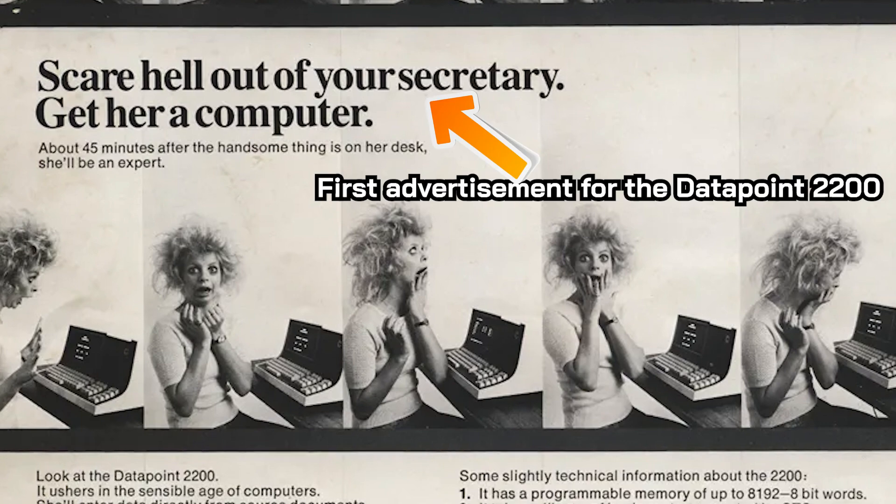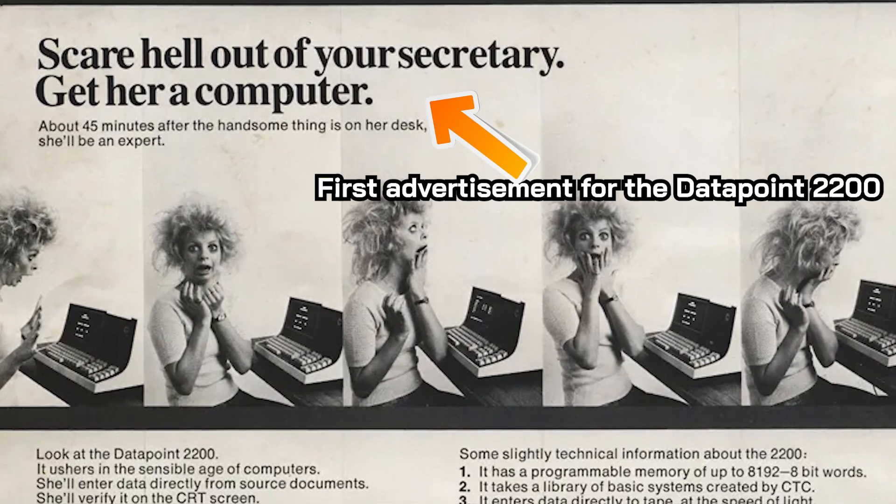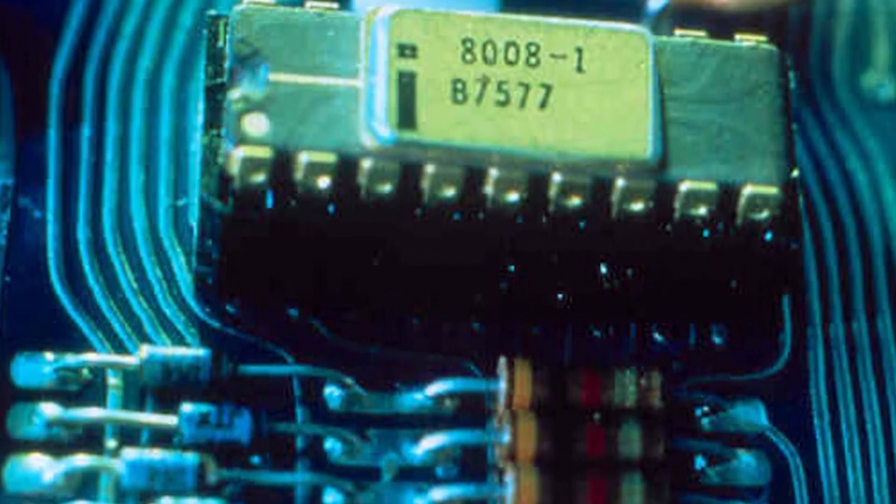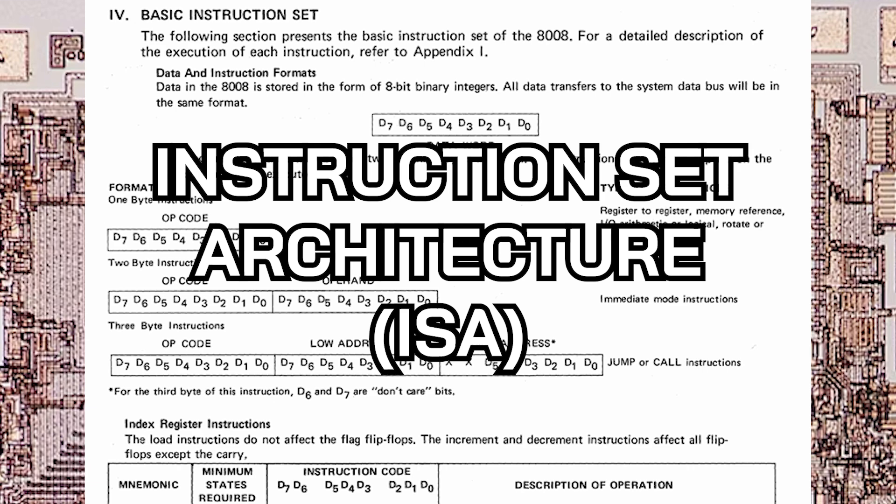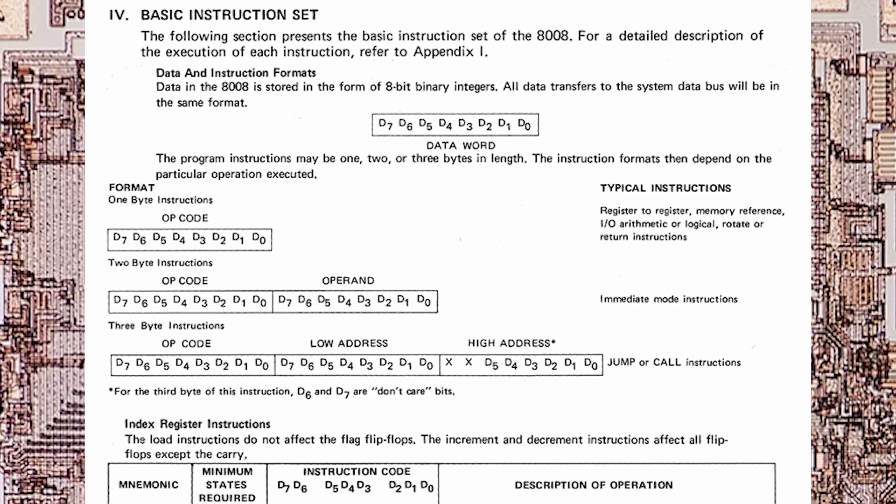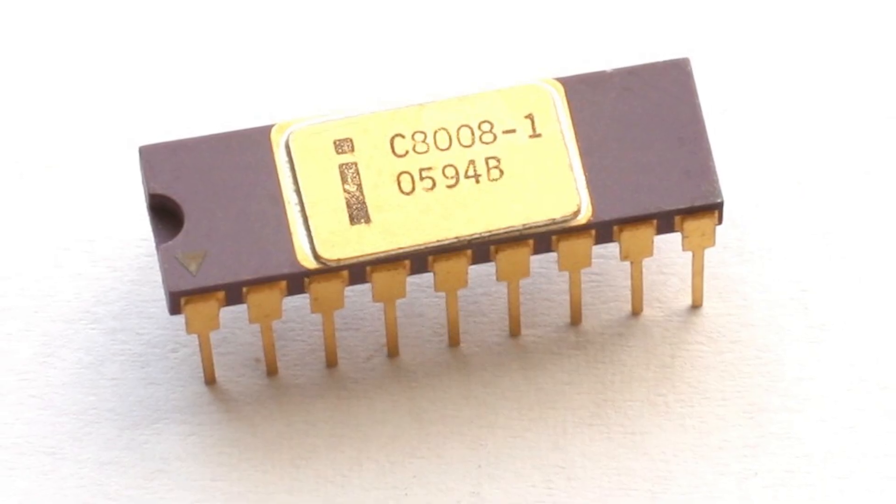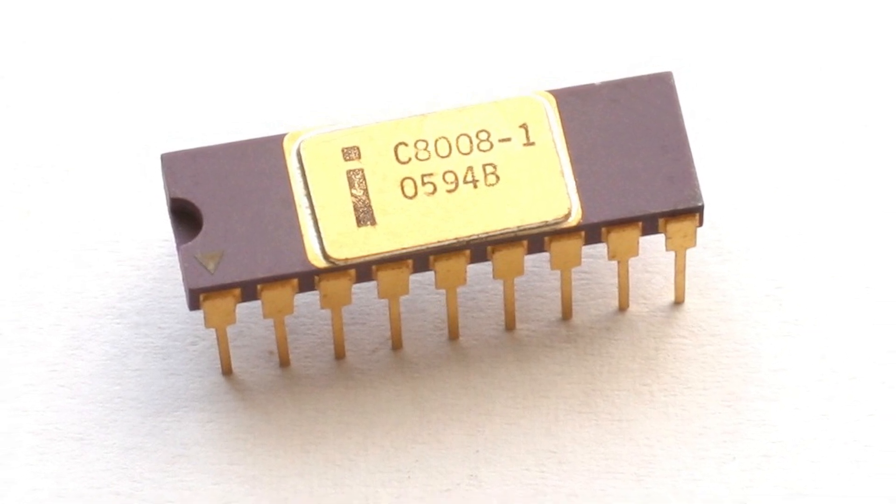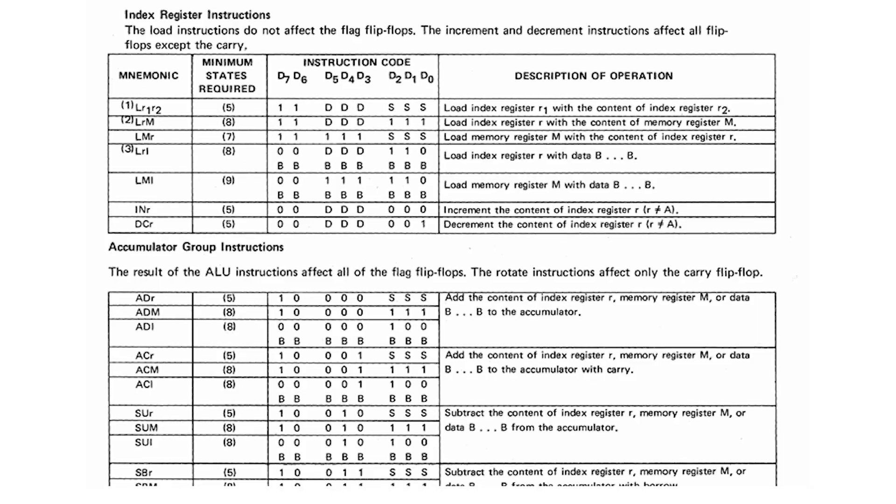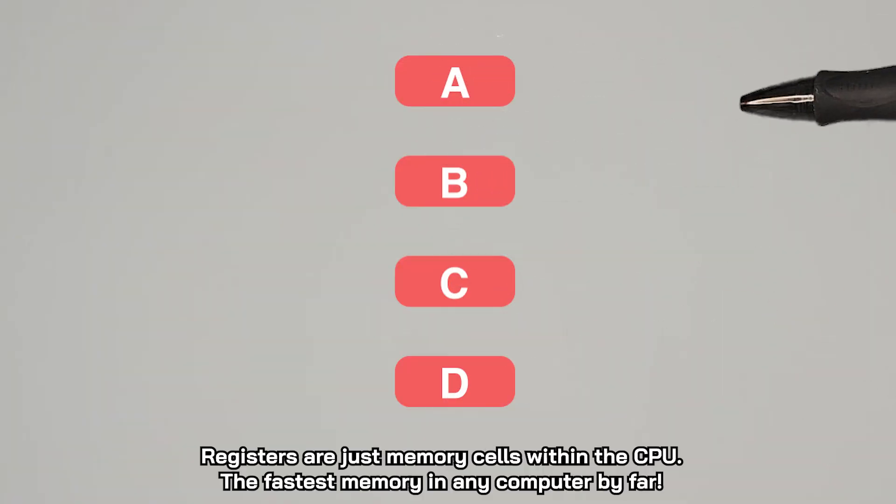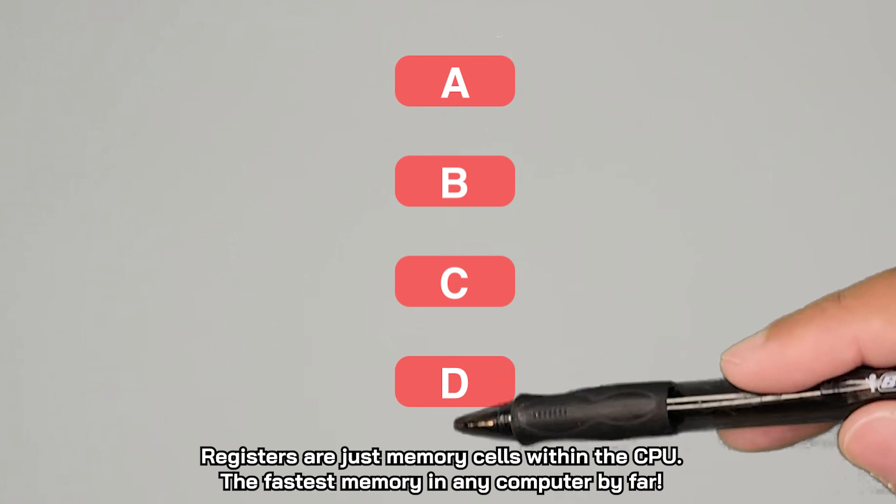So Datapoint went with their prototype design and began manufacturing and selling their Datapoint 2200 in 1970, pretty much just a computer built from TTL logic chips. However, while Intel was developing the chip, even though they were late and they sort of lost the job, they fell in love with that chip they were making. They loved the simplicity and how clean the instruction architecture or the ISA was that Datapoint had. And they opted to continue working on the chip for their own benefit and licensed it from Datapoint. That chip ended up being the 8008 released in 1972.